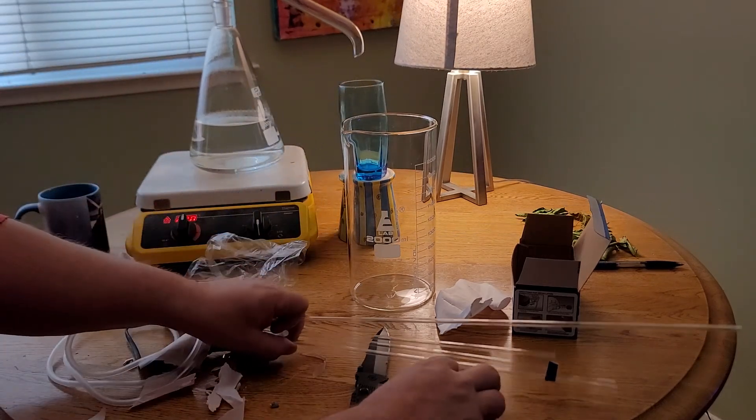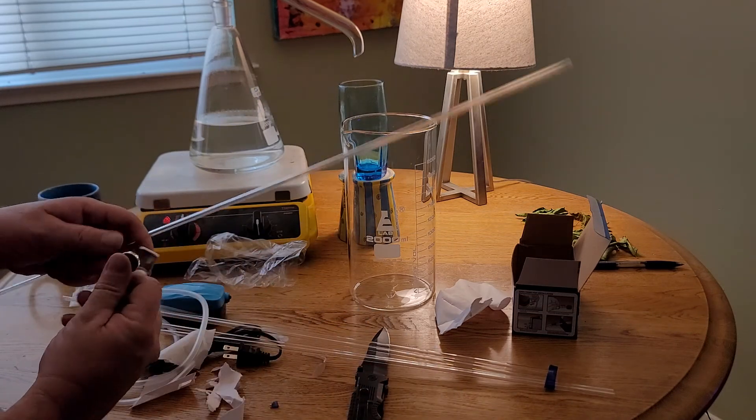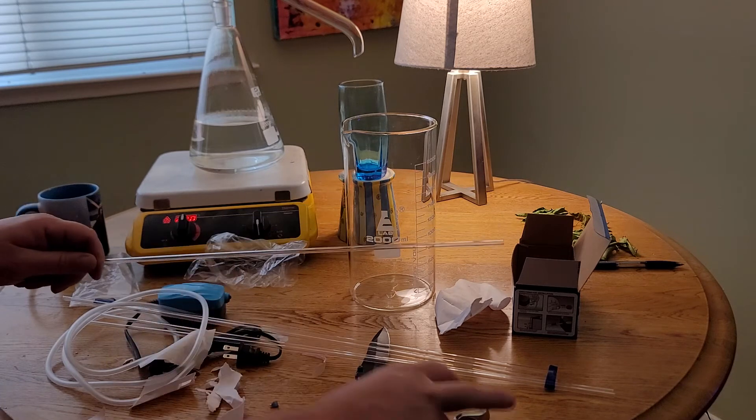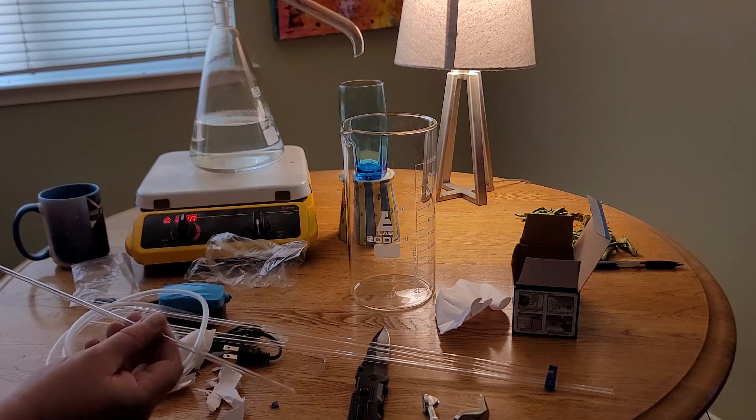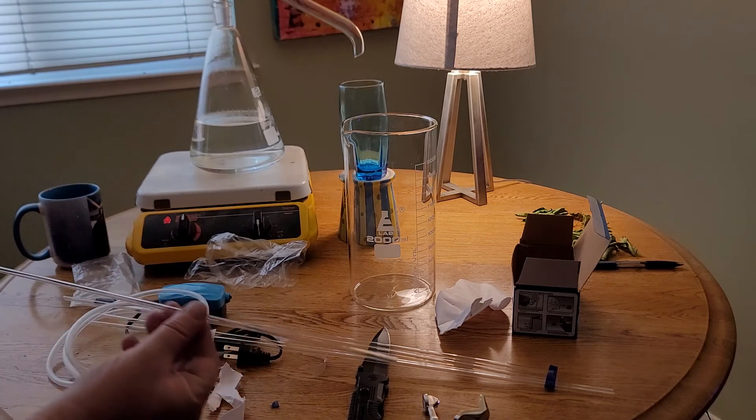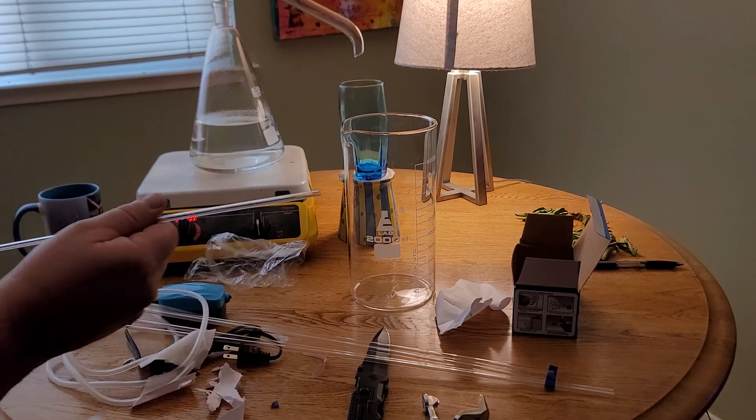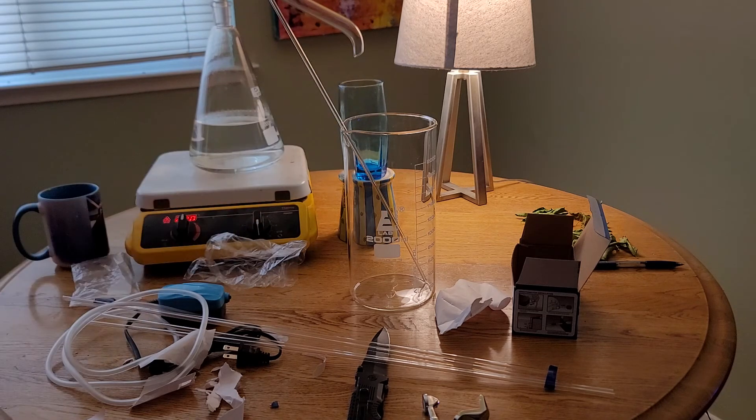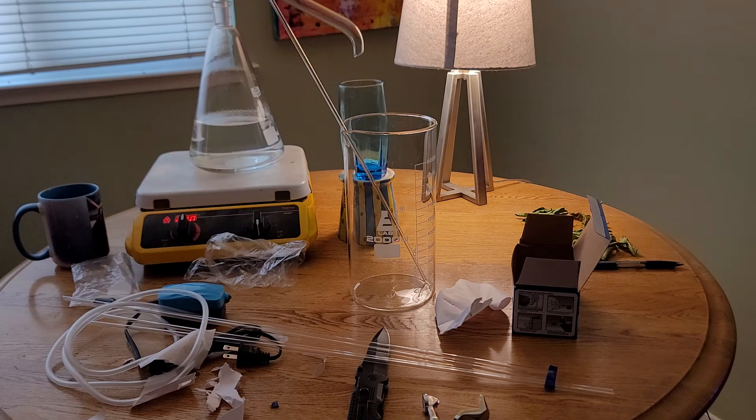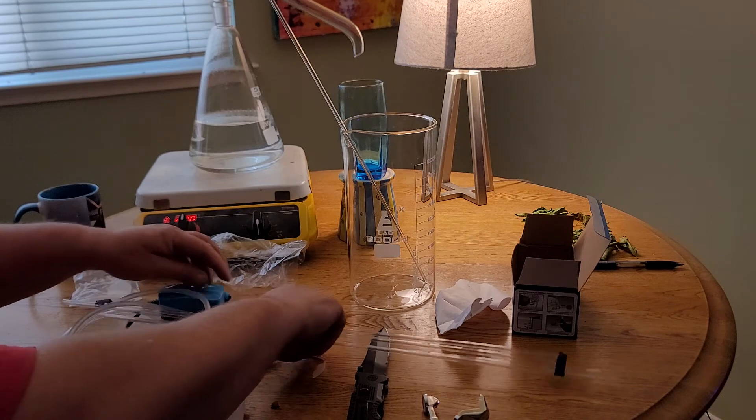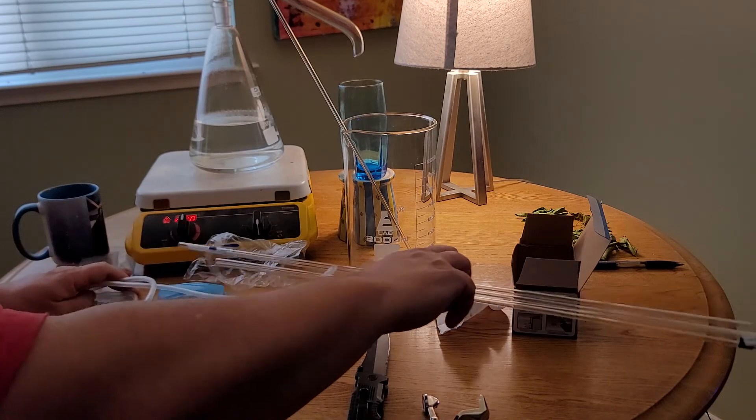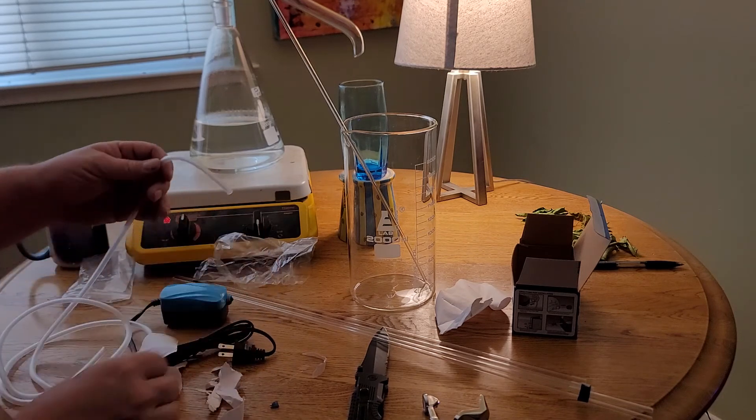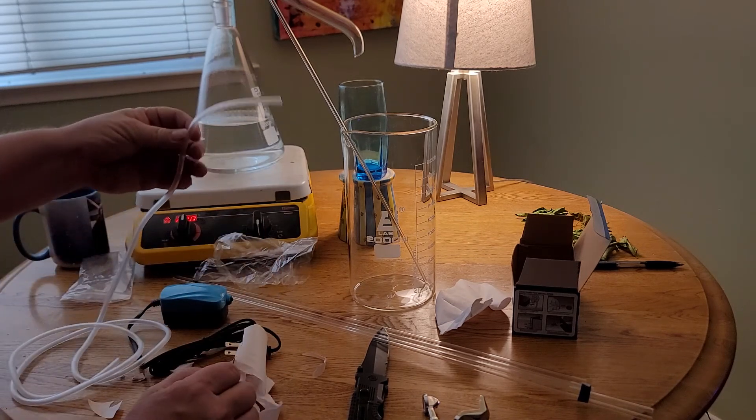And then with this glass cutter, I should be able to score this and snap it off and cut it to length. And then I may do some heating and bending, kind of like a straw, because this is designed to go in the beaker like so and connect the aerator pump to it with the tubing.